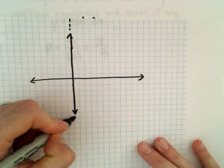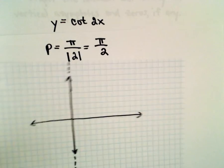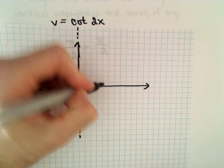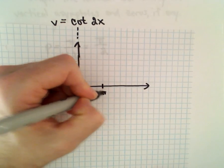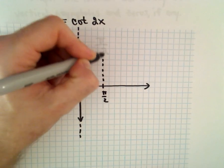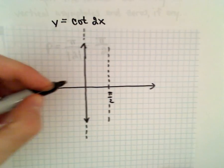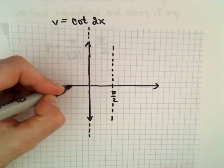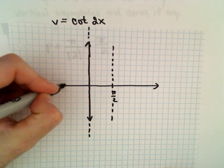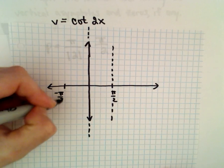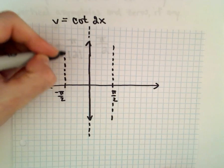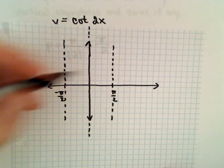Cotangent has a vertical asymptote at x equals 0. To get to the next vertical asymptote, we'll go over here to x equals pi over 2. And likewise, if we want to do maybe two periods, we can put an asymptote there as well at x equals negative pi over 2.